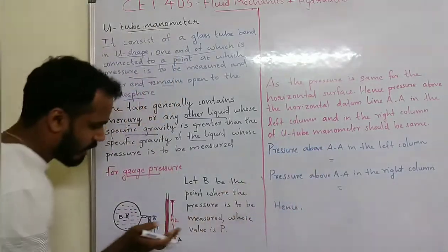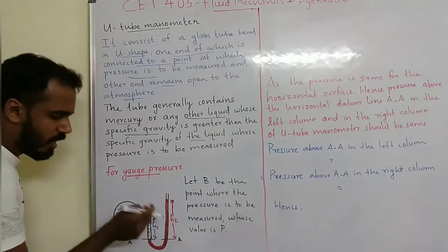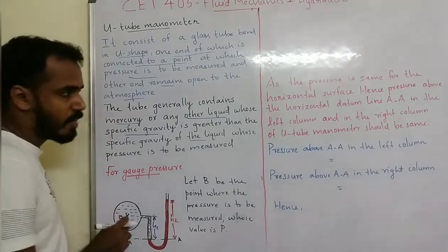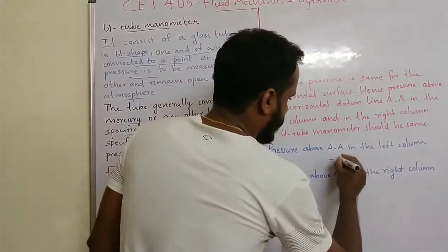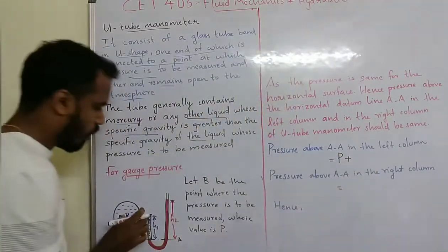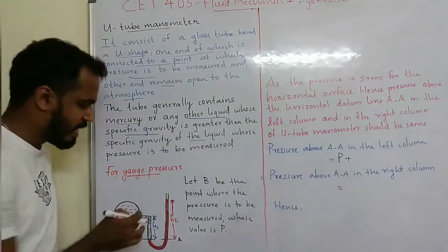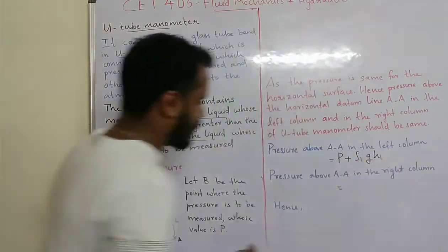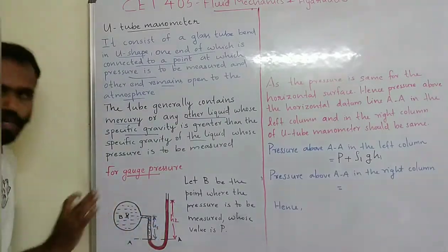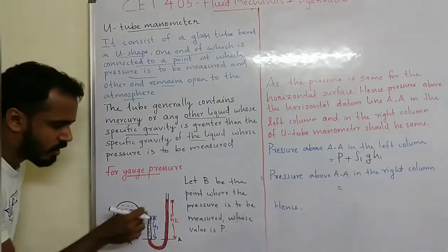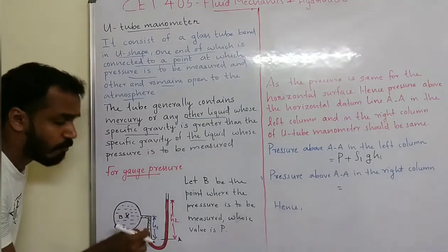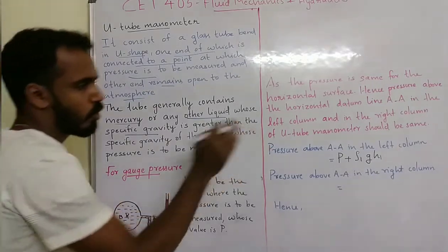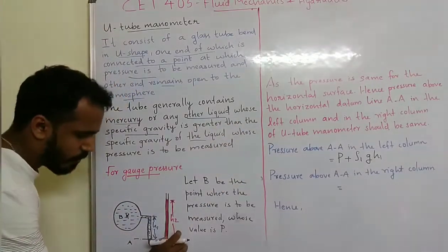At the datum line AA, in the left column, if the height is H1, the pressure head is rho1 times g times H1. The total pressure on the left side is P plus rho1 g H1.